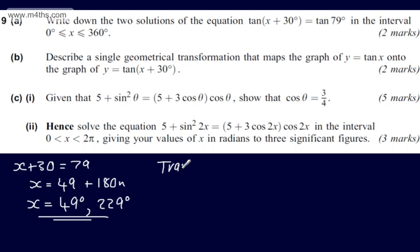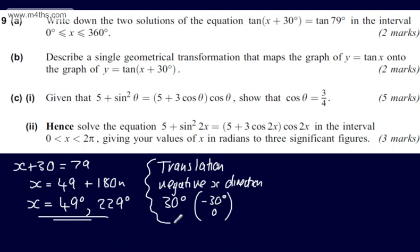This is a translation. It's in the negative x direction. So we can say negative x direction, and we have now a 30 degree shift. So 30 degrees. If you want a vector, it's minus 30, zero. So a sentence to state a translation of 30 degrees in the negative x direction will give you the two marks.